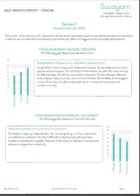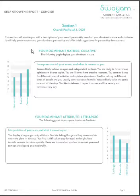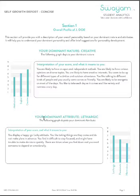In page 3 you will see two parts. The first part is your dominant nature — dominant means most powerful. This part will tell you what your most powerful nature is. Read the description to understand the good things about your nature and what you need to improve. The second part talks about your most powerful attribute — attribute means quality of a person.